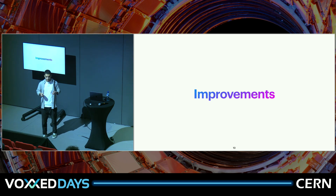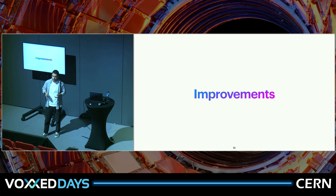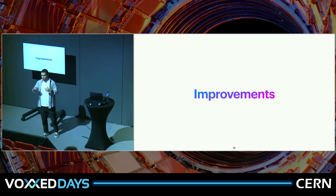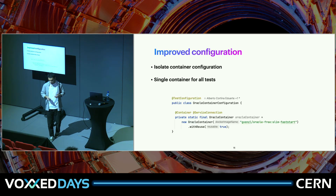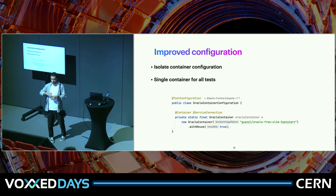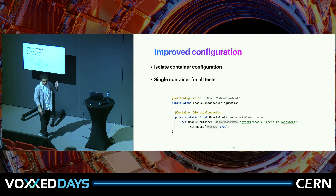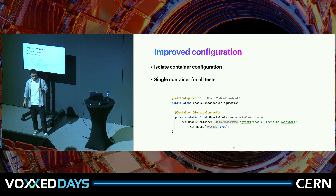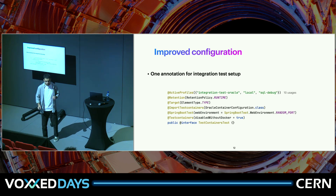That's the basic setup — check the documentation, it's quite easy. But we felt there was room to improve scalability and developer productivity. We started by isolating the container into a single configuration file — a test configuration where a single container is shared across the whole test suite. You can also see we use 'withReuse', which I'll talk about shortly.